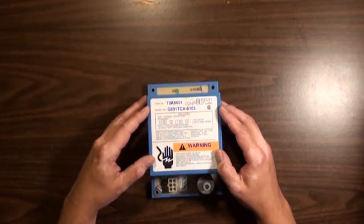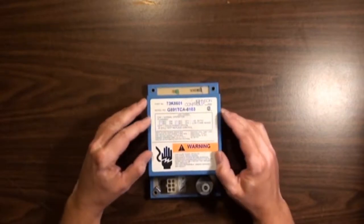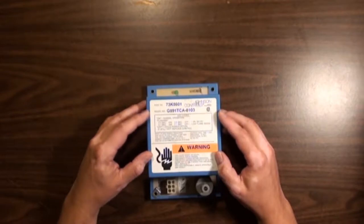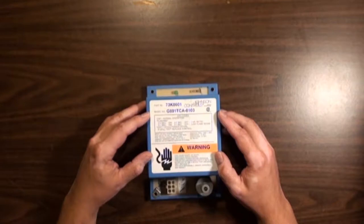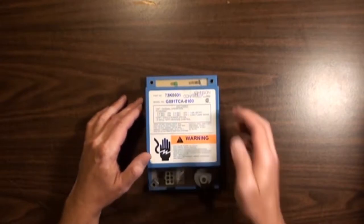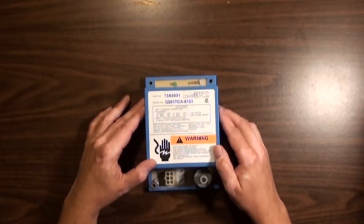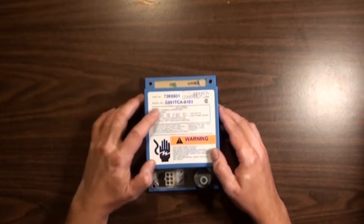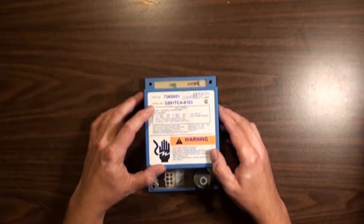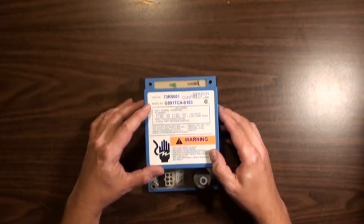It's been running fine ever since then, so about four years. This was his first one that he had replaced, so I figured we'll take a look at this one and see if we can repair some bad solder joints, like we did with the second one. The model number here is a G891 TCA-8103, and this came out of a Lennox Pulse heating unit.